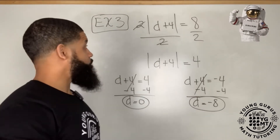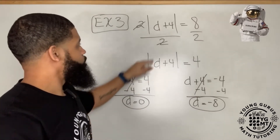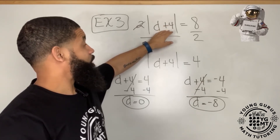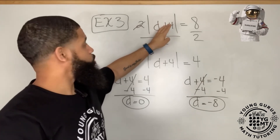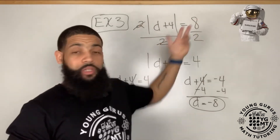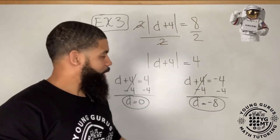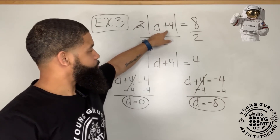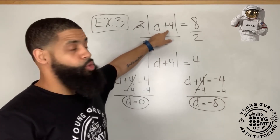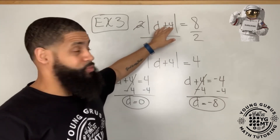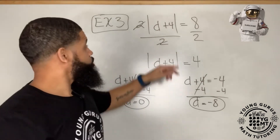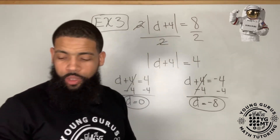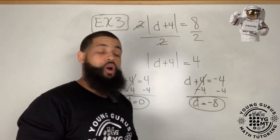For d equals zero: zero plus four is four, the absolute value of four is four, and four times two equals eight. For d equals negative eight: negative eight plus four is negative four, the absolute value of negative four is four, and four times two equals eight. Both values check out and are correct.